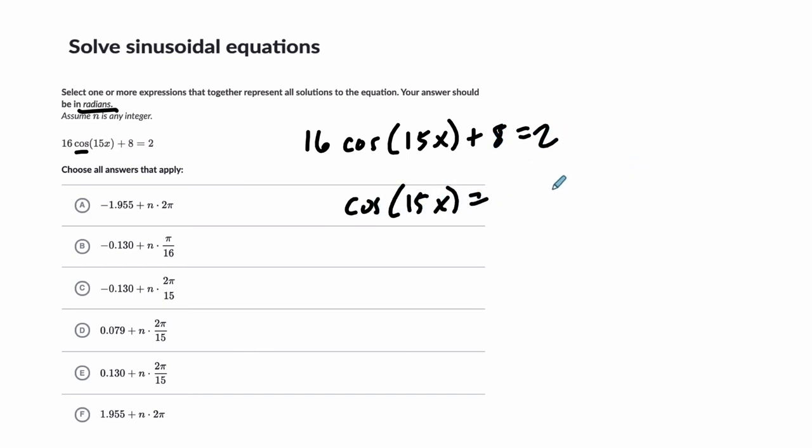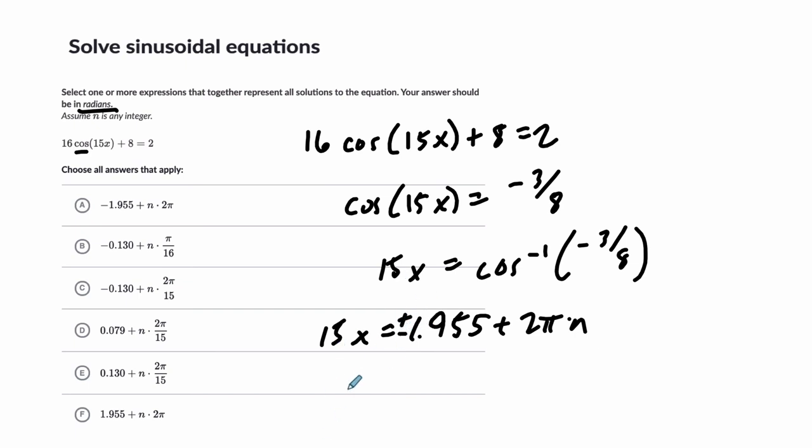Subtract 8 from both sides, divide by 16. 2 minus 8 is negative 6. Negative 6 divided by 16 reduces to negative 3 eighths. We take the inverse cosine of both sides, and we end up with this statement here. So 15x equals the inverse cosine of negative 3 eighths. On the calculator we get about 1.955 radians plus, not 360 now, but 2 pi times n. And I'm going to write it this way, plus or minus, because it's one or the other that will get you the same cosine. And then you divide everything by 15, and we get plus or minus 0.1303, and then 2 pi divided by 15 times n. And we get, I think this one and this one. Okay, hope this helped.